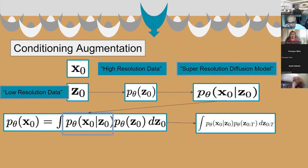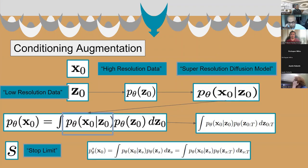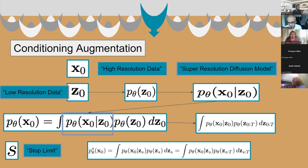We introduce the S variable as the point of stop, or stop limit, to refer to the truncation of the low-resolution reverse process to stop at that time. The removal or truncation of some time steps between zero, S, and T has an effect on the overall performance and efficiency of the model.